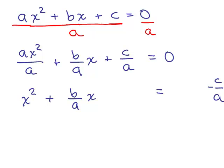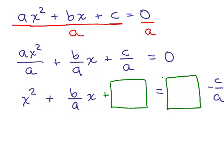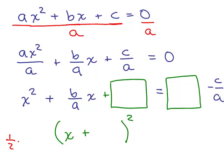I'm going to complete the square by adding something to both sides. If this is a perfect square, to get x squared we need x times x. Since this middle term is a plus, that term inside gets multiplied by 2 to give b over a — so it must be half of b over a to begin with. Half of the coefficient of x: half of b over a is b over 2a.